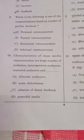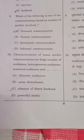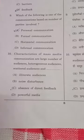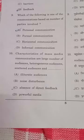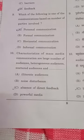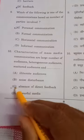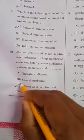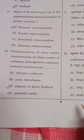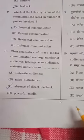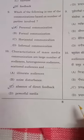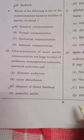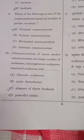In the tenth question, the characteristics of mass media communication are: a large number of audience members, heterogeneous audience, scattered audience, and the absence of direct feedback. Because of the large number of people, quick feedback cannot be obtained. So option C is the right answer for the tenth question.